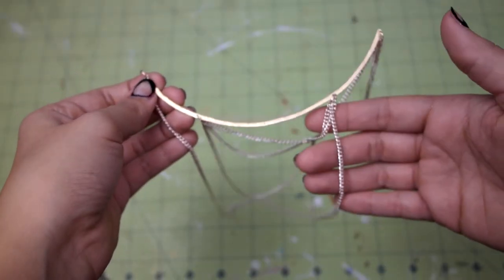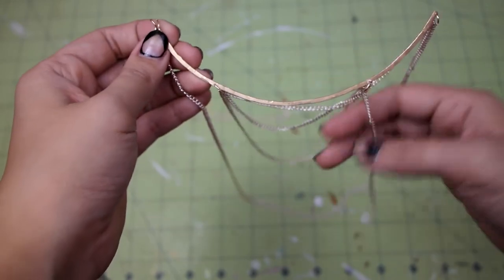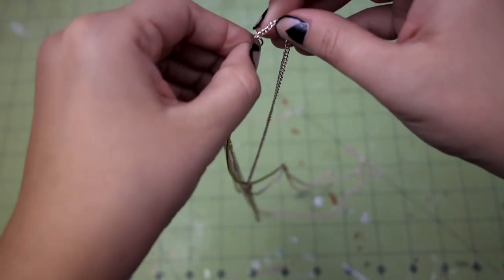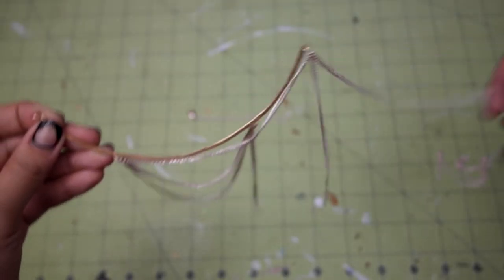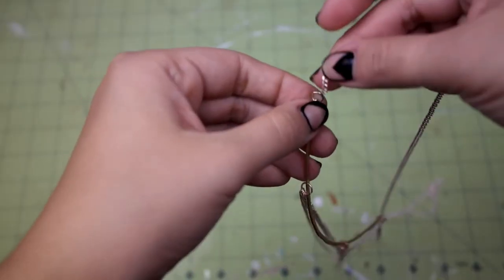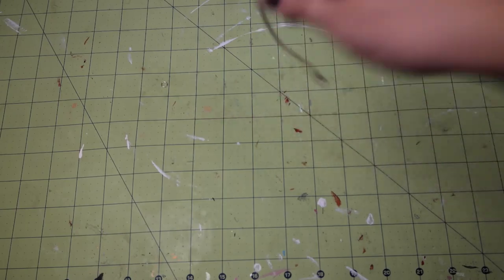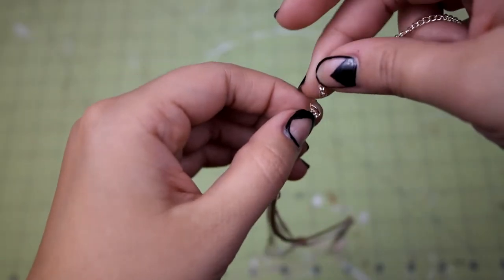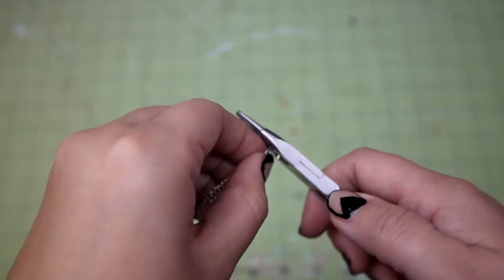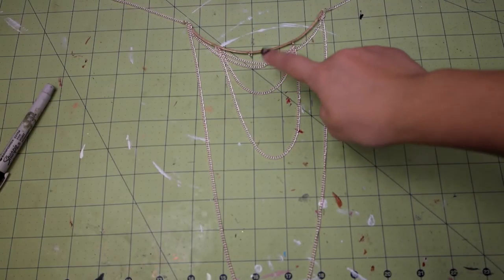So here in hole one, you'll attach the five inch length of chain from hole four, the twenty four inch length of chain from hole five, and then the four inch length of chain that has the lobster clasp attached. Close this jump ring and it's time to go back to hole three.